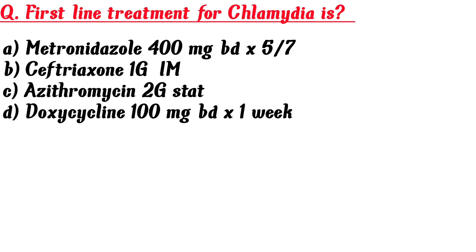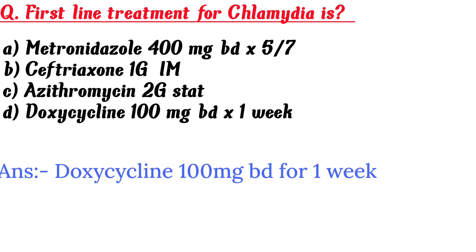First line treatment for Chlamydia is: A. Metronidazole 400mg BD x 5-7 days, B. Ceftriaxone 1g IM, C. Azithromycin 2g stat, D. Doxycycline 100mg BD x 1 week. Answer is Doxycycline 100mg BD for 1 week.